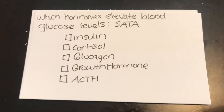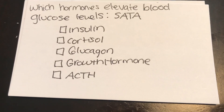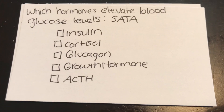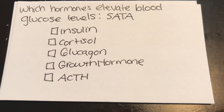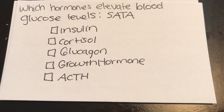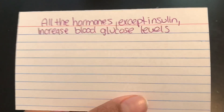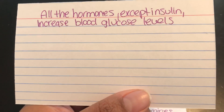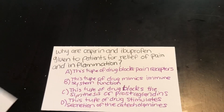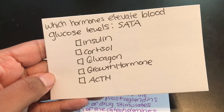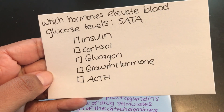Which hormones elevate blood glucose levels? Select all that apply: insulin, cortisol, glucagon, growth hormone, ACTH. All the hormones except for insulin increase blood glucose levels — so that's cortisol, glucagon, growth hormone, and ACTH.